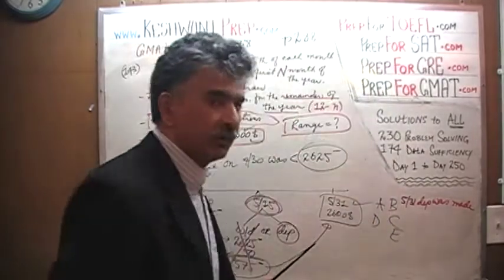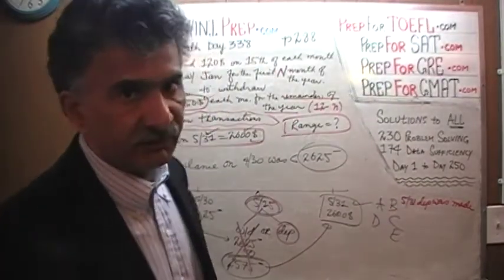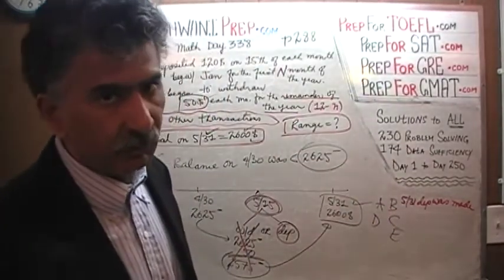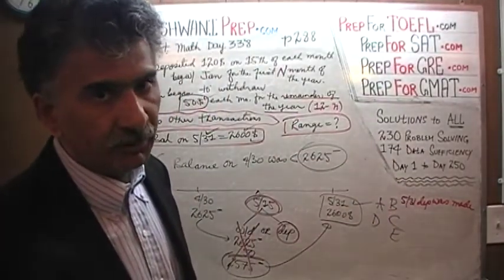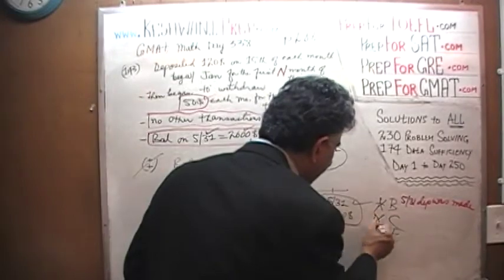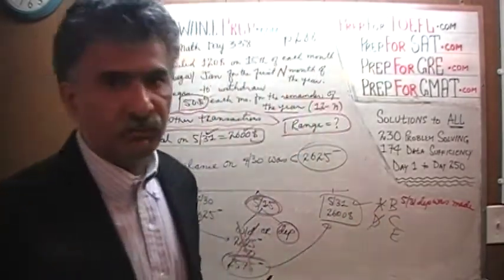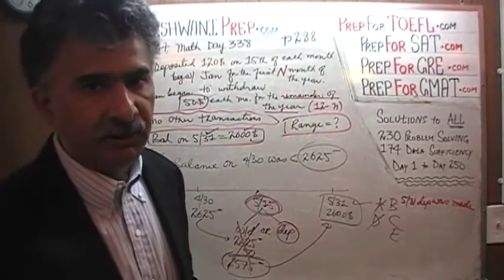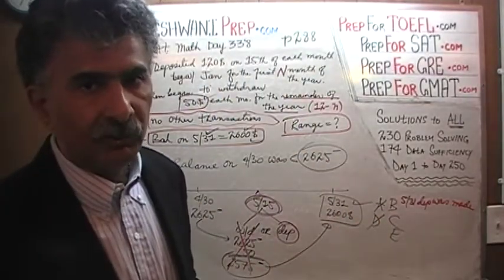Now that we know the first statement by itself is not sufficient, we know the answer cannot be A or D — it would have to be either B, C, or E.